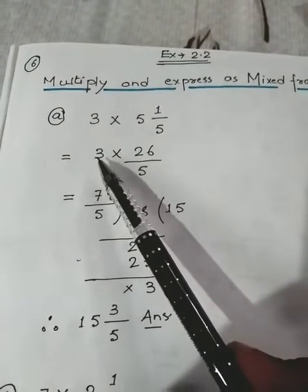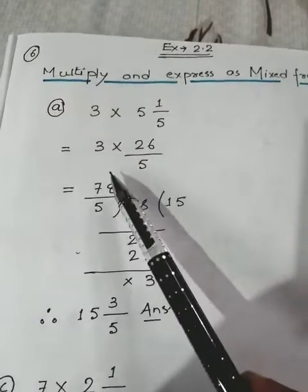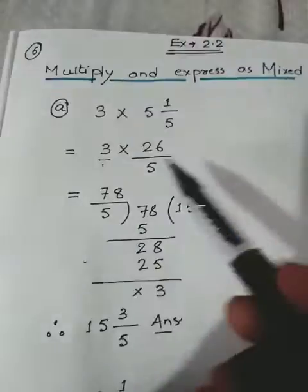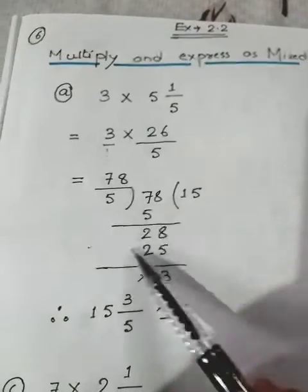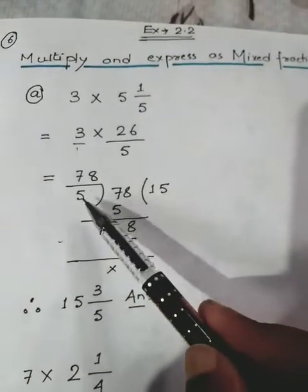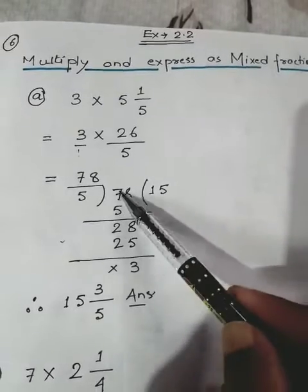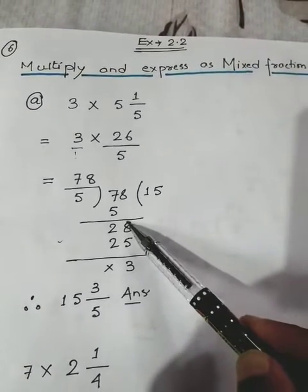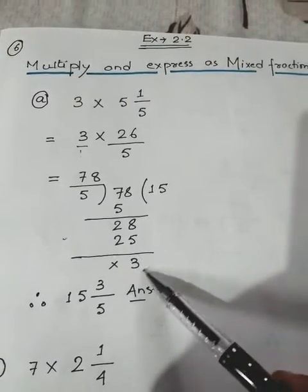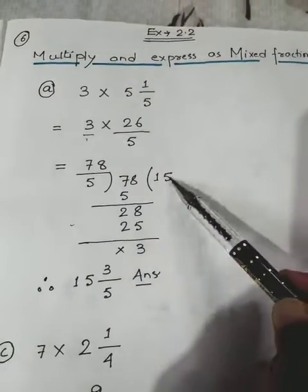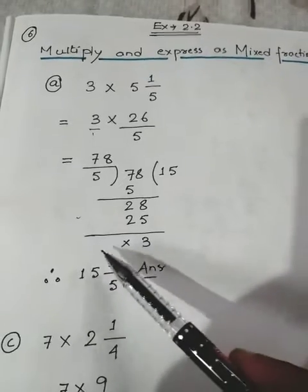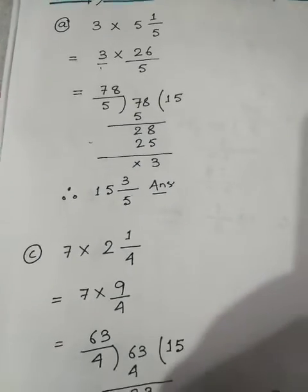Now simply multiply: 3 × 26 = 78, and below 3 there is 1, so denominator is 5 × 1 = 5. Now divide 78 by 5: 5 × 15 = 75, remainder is 3. So the answer in mixed fraction form is 15 3/5.